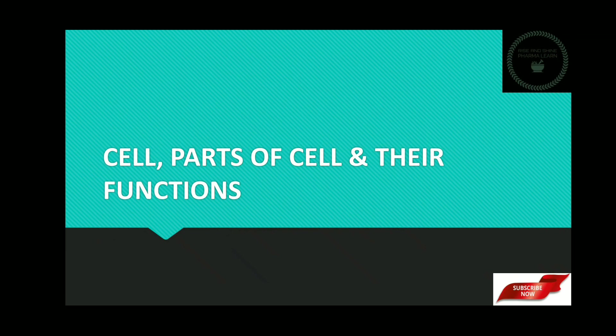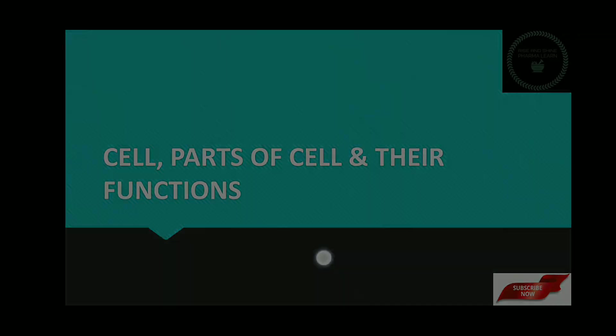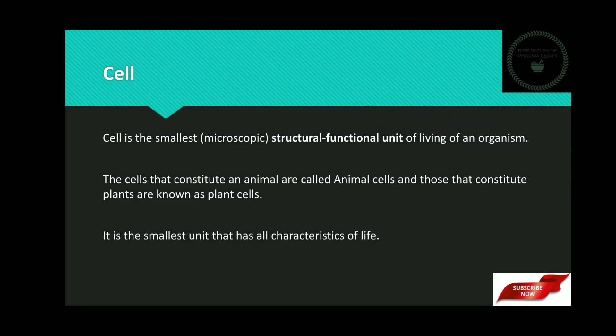First of all, what is meant by cell? Cell is the smallest microscopic structural functional unit of a living organism. Basically it is of two types. First one is an animal cell, which is present only in animals. Next one is a plant cell, which is present only in plants. It is the smallest unit which has all characteristics of life.